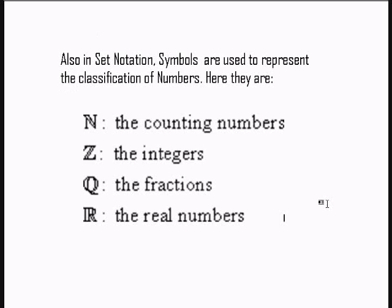Also in set notation, symbols are used to represent the classification of numbers. Here they are: N, the counting numbers; Z, the integers; Q, the fractions; R, the real numbers.